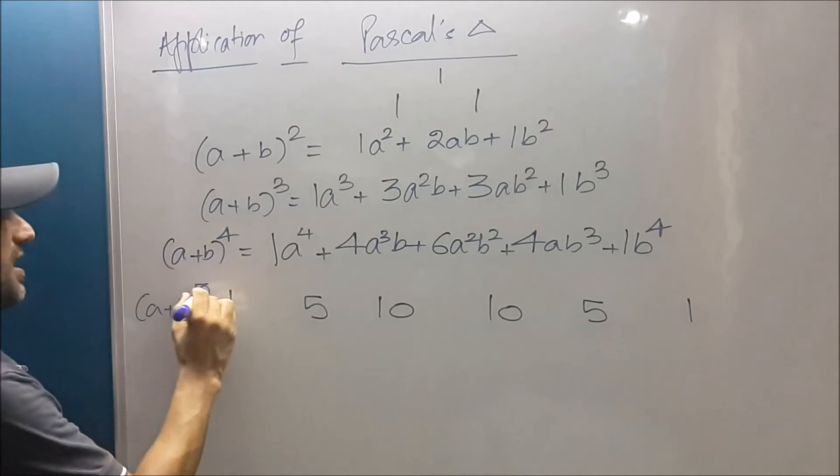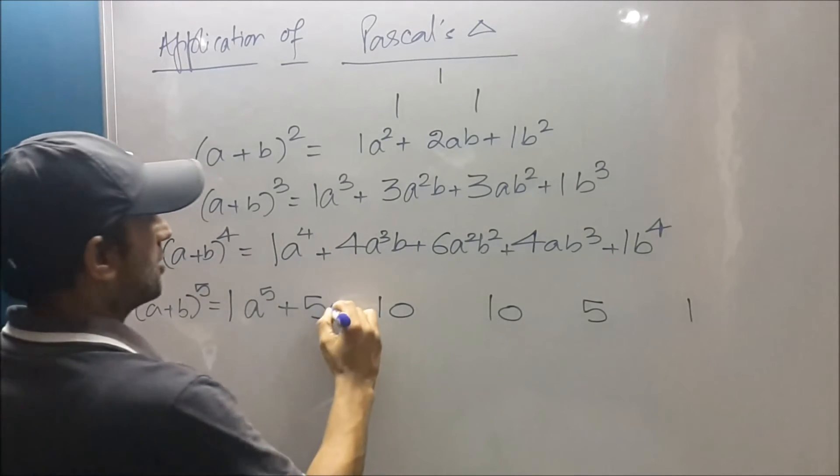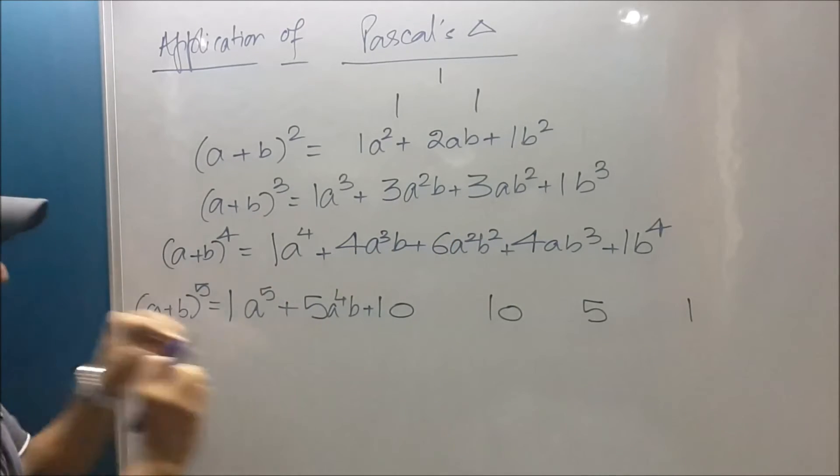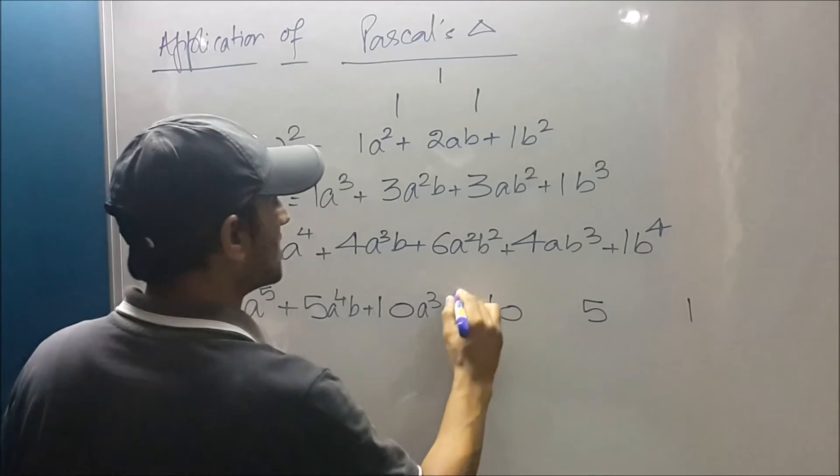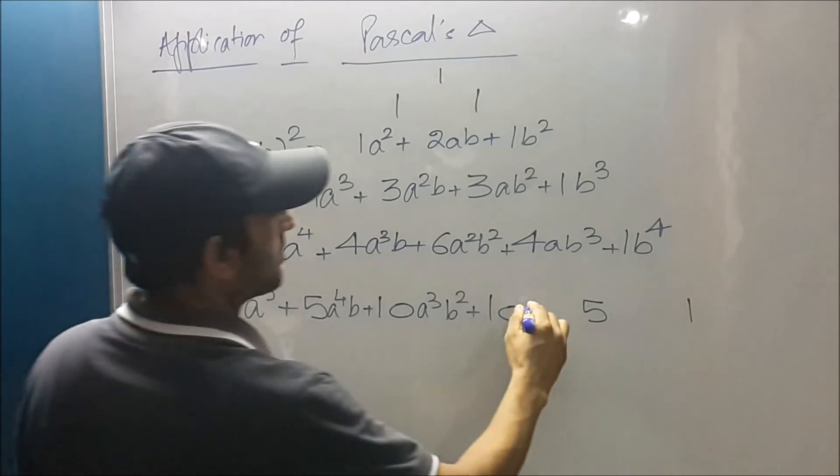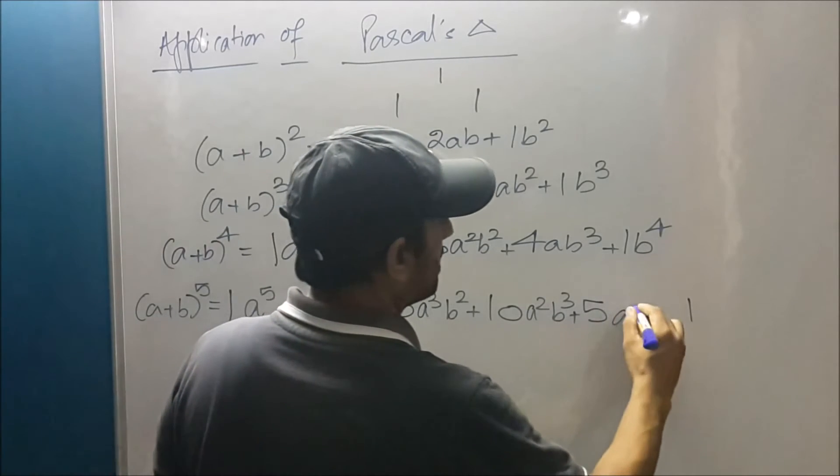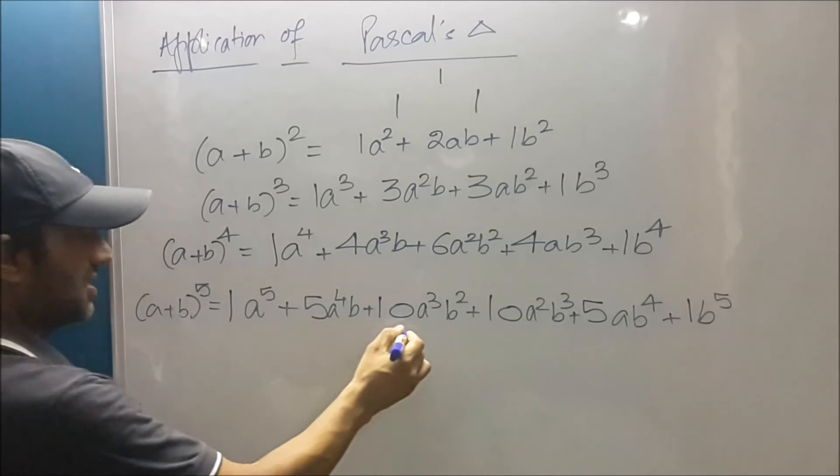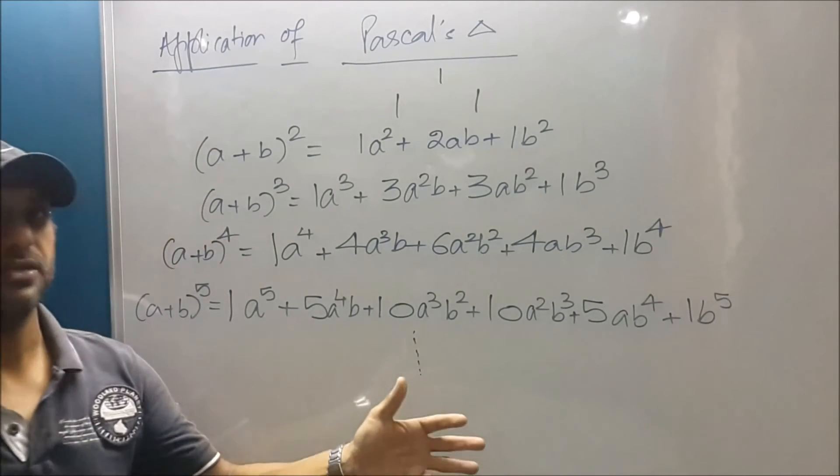One project for you: what is (a + b)⁵? That is a⁵ + 5a⁴b, then increasing the power and reducing the powers on a, 10a³b² + 10a²b³ + 5ab⁴ and finally b⁵. This is how you can write any binomial expansion.